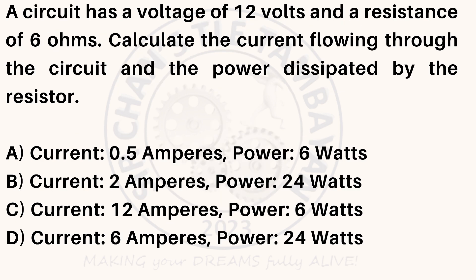A circuit has a voltage of 12 volts and a resistance of 6 ohms. Calculate the current flowing through the circuit and the power dissipated by the resistor. A. Current: 0.5 amperes, power: 6 watts. B. Current: 2 amperes, power: 24 watts. C. Current: 12 amperes, power: 6 watts. D. Current: 6 amperes, power: 24 watts.